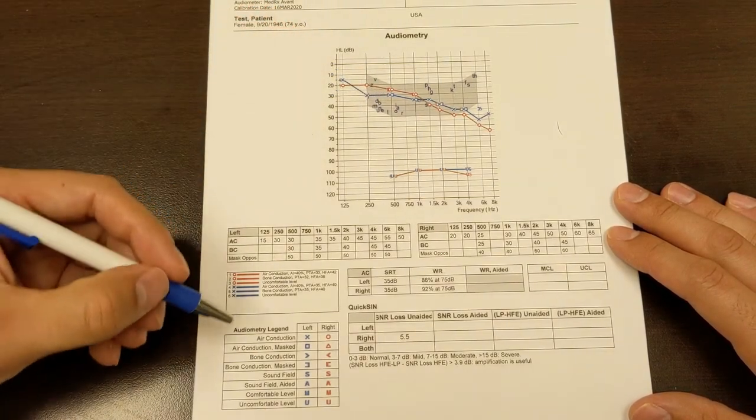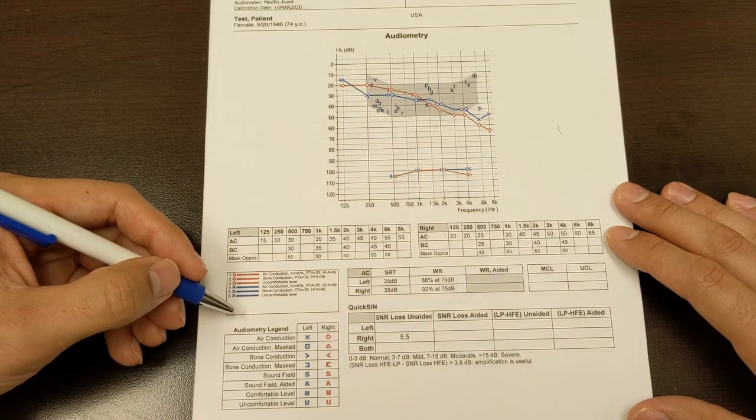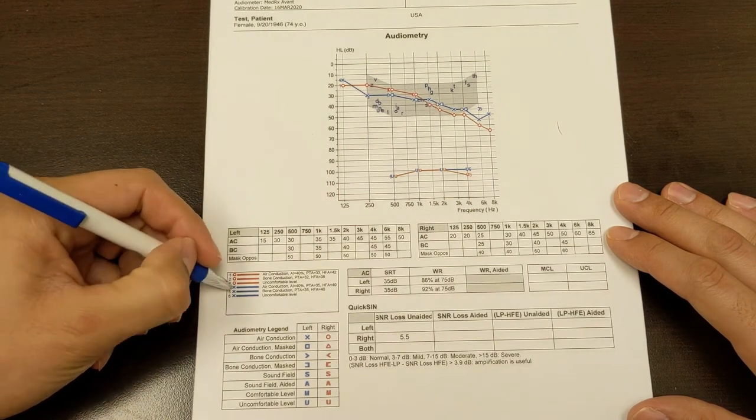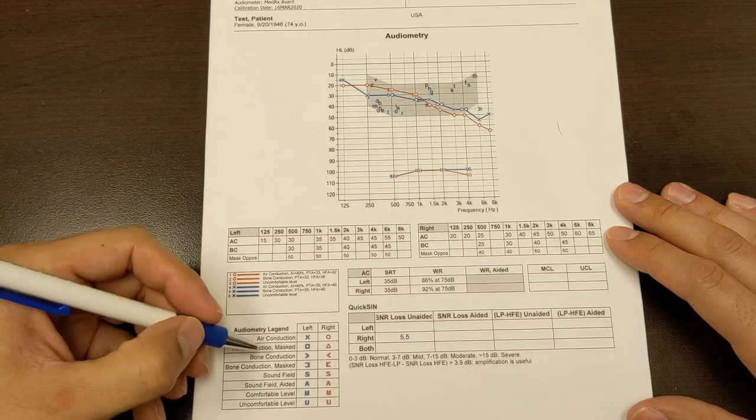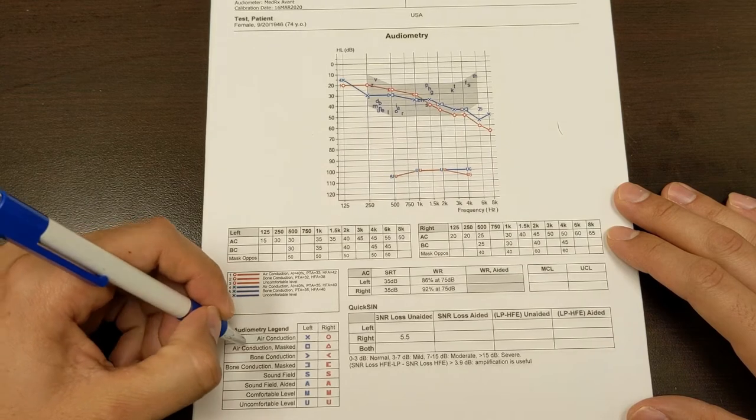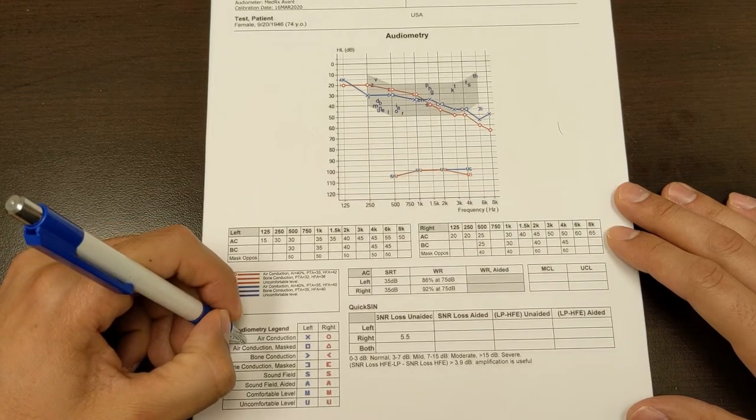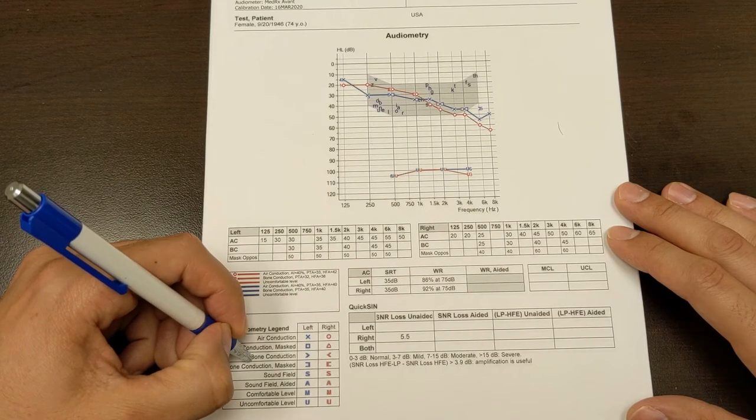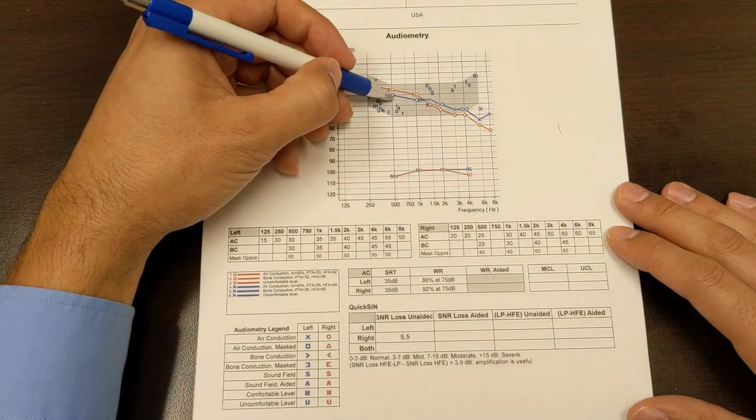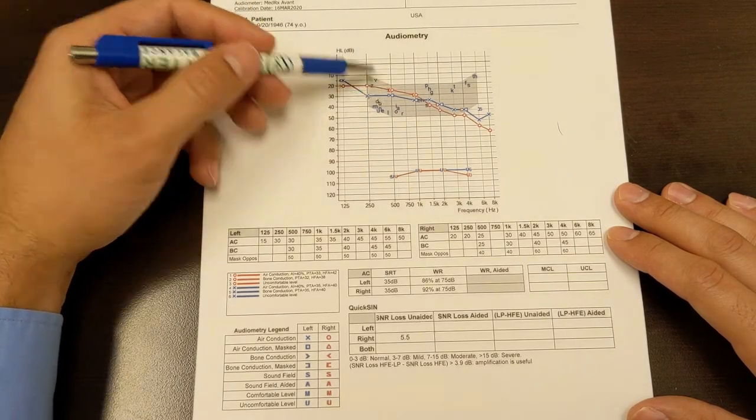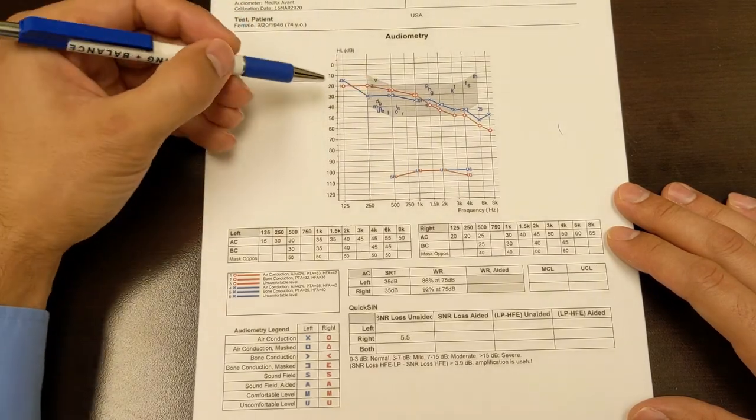So air conduction responses are recorded with the O's for right side and the X's for left side. And you can see a legend is always going to be printed on the audiogram. And then it's represented with these little bracket marks if it's bone conduction. And those should line up to about the same as each other. So they should be either on top of each other or within 10 decibels.